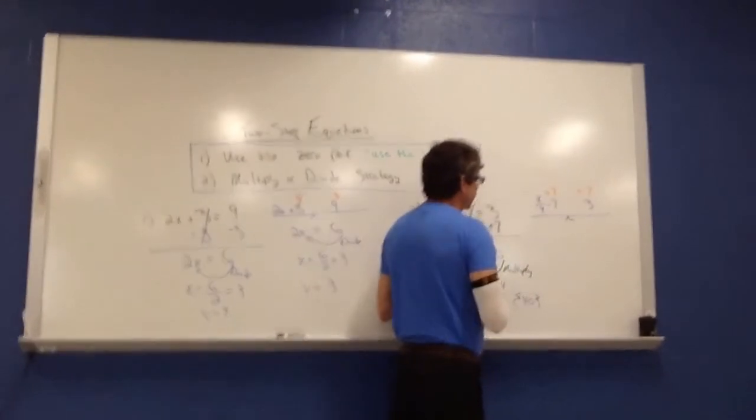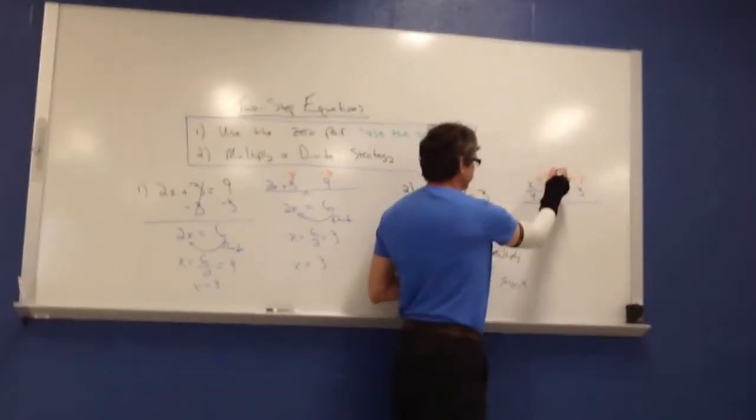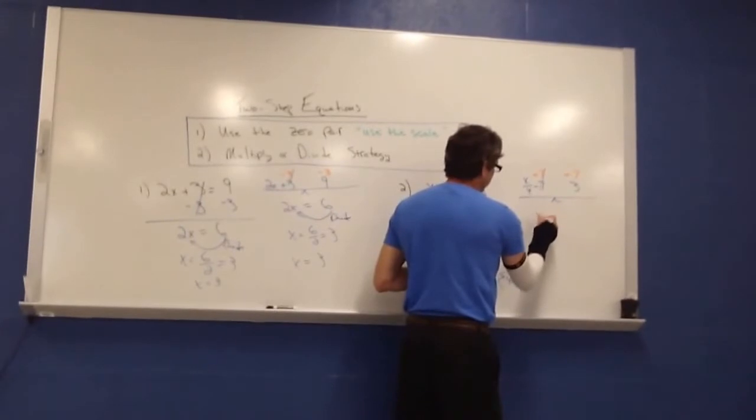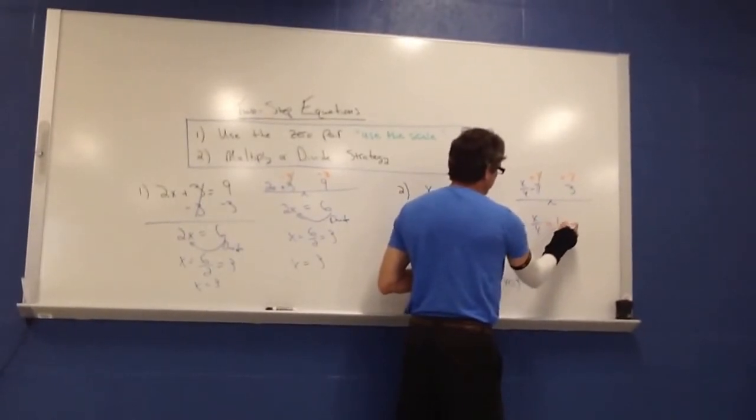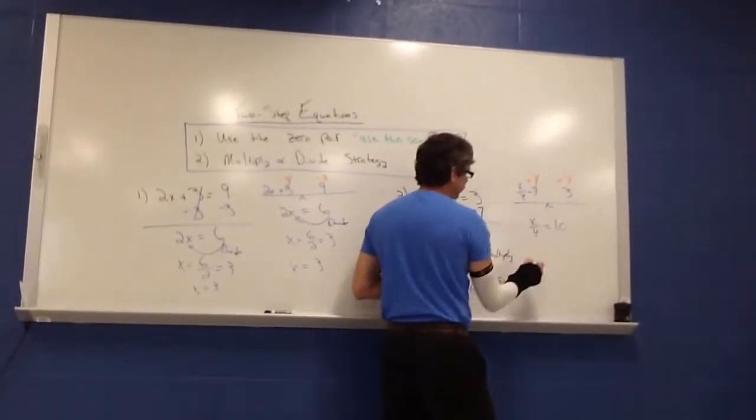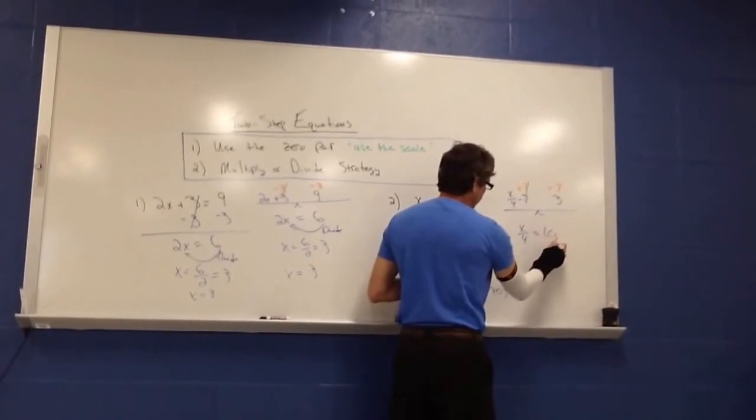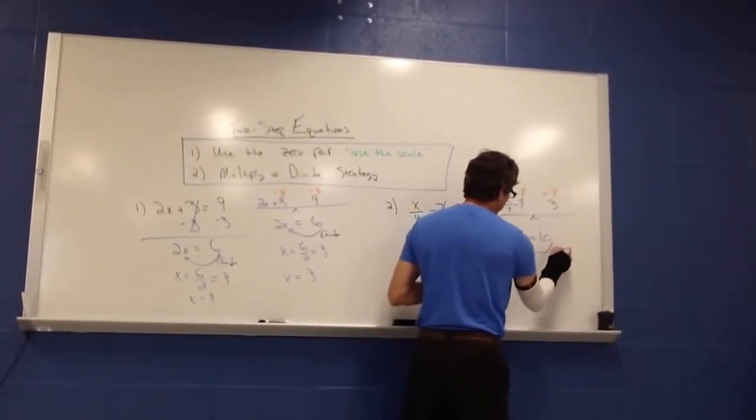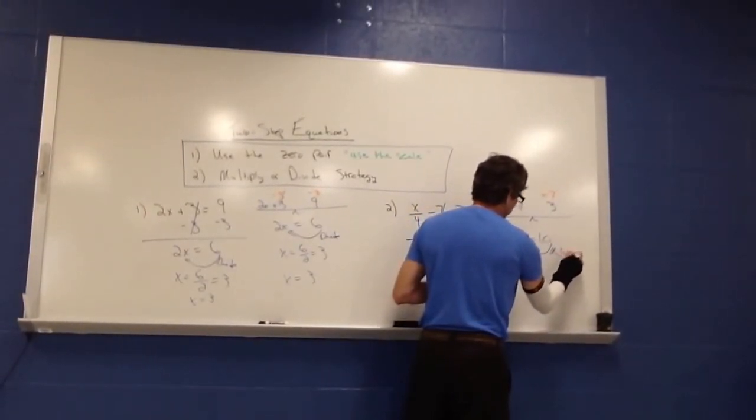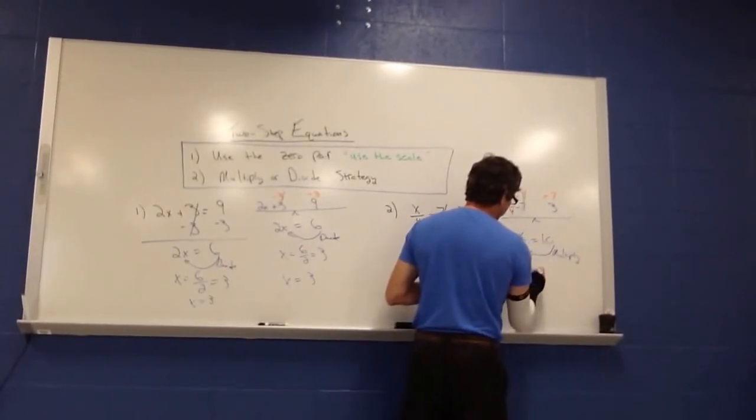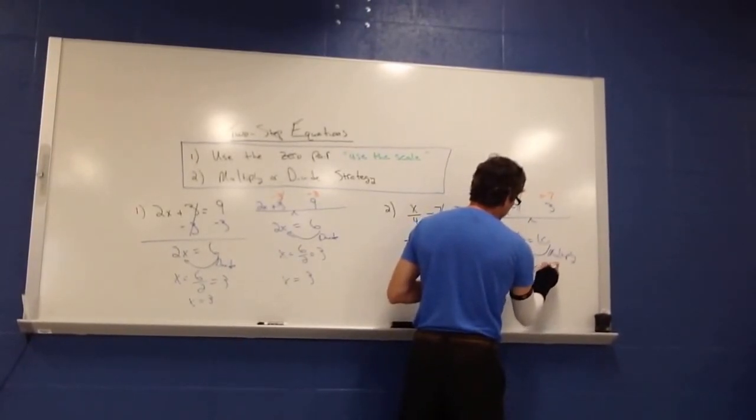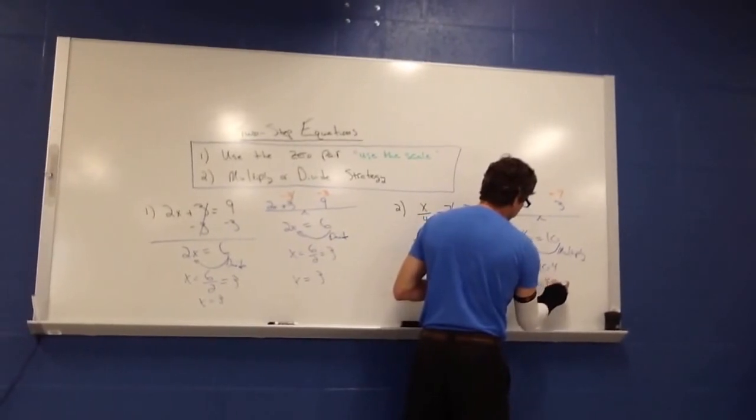So we pick up on that. That 7 and negative 7 will zero out. You have then x over 4 is equal to 10. And then this math just tells me that since this is division, I can go backwards and multiply to solve the equation. So x is going to equal 10 times 4, which x would equal then 40.